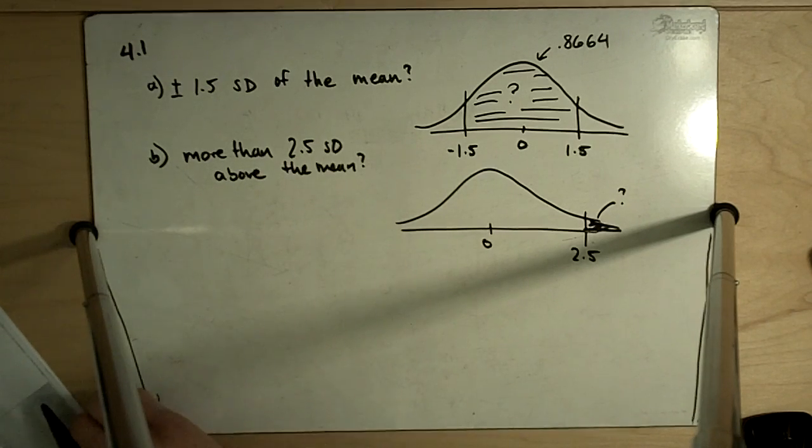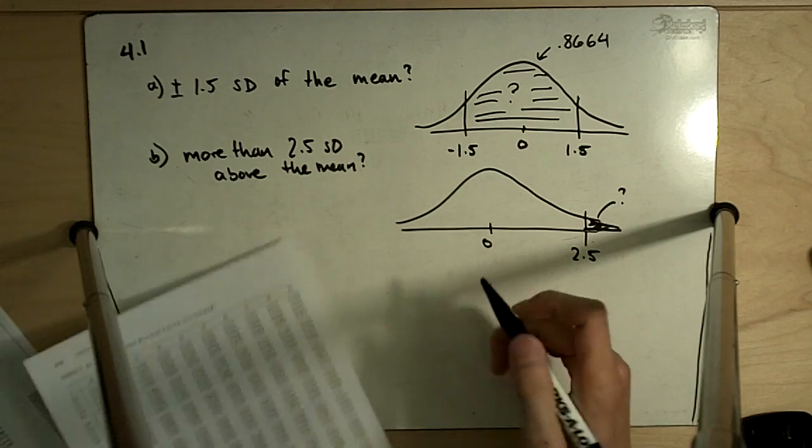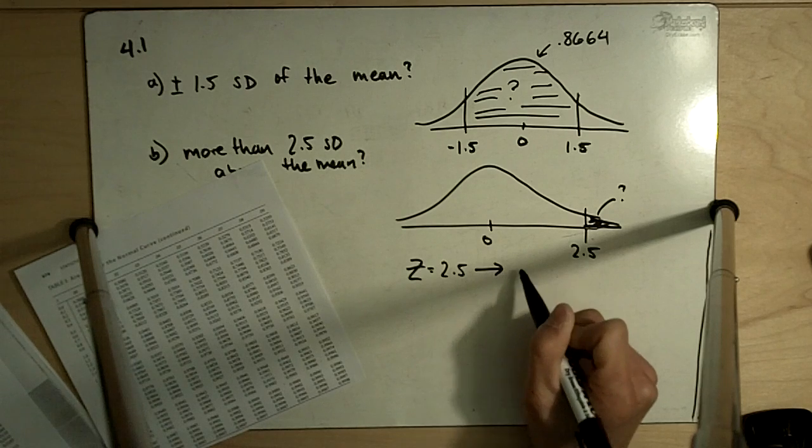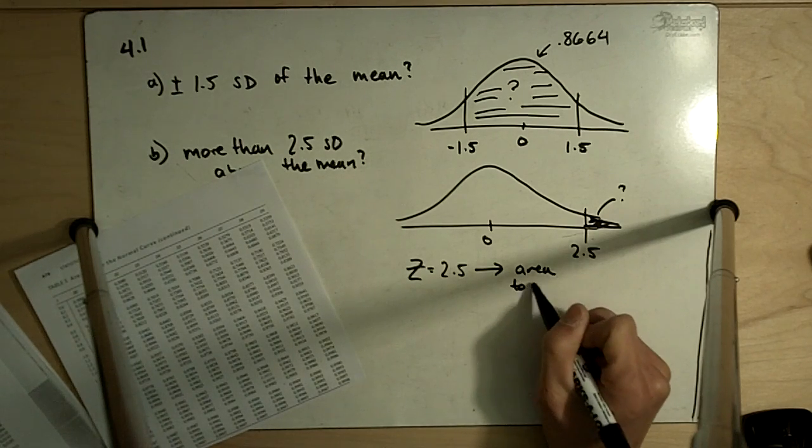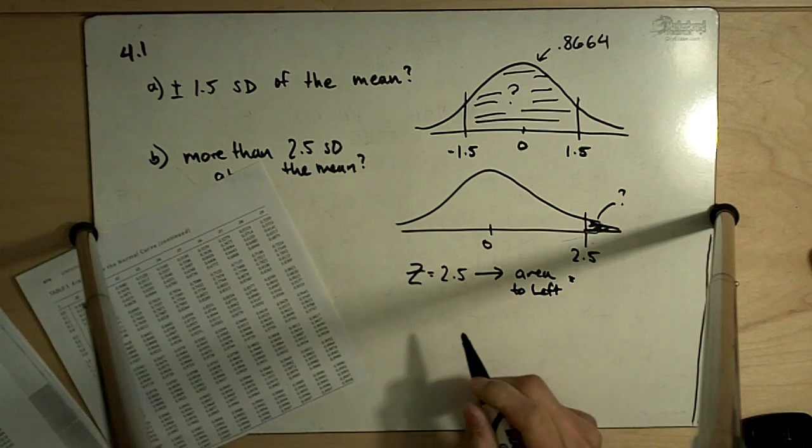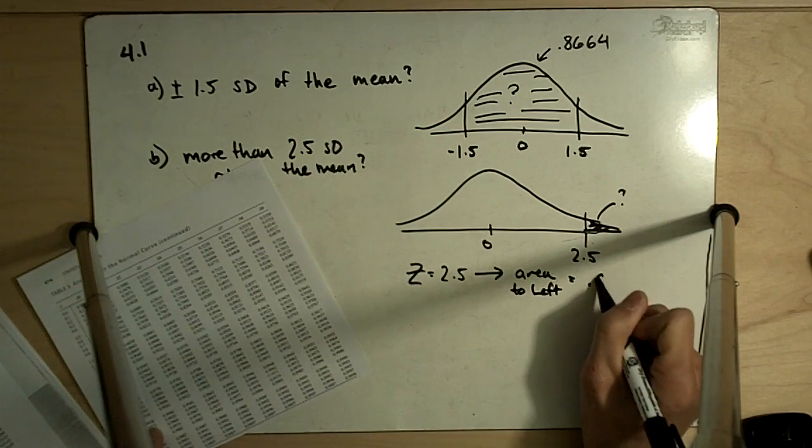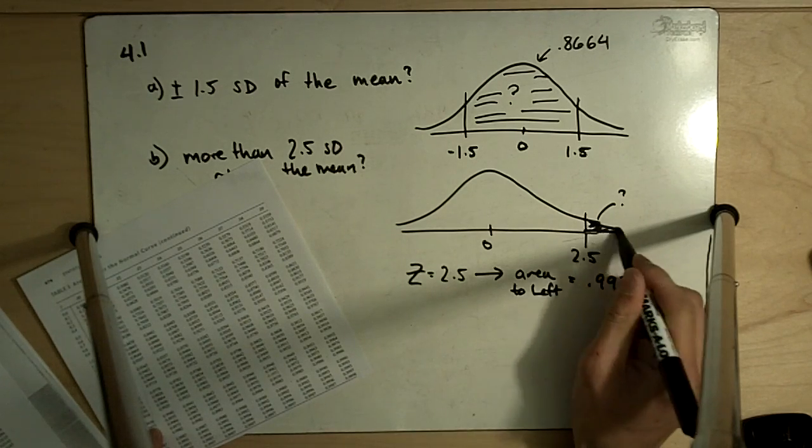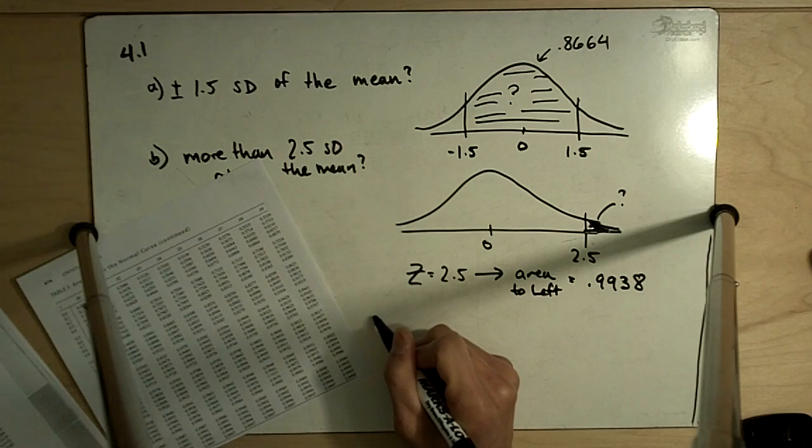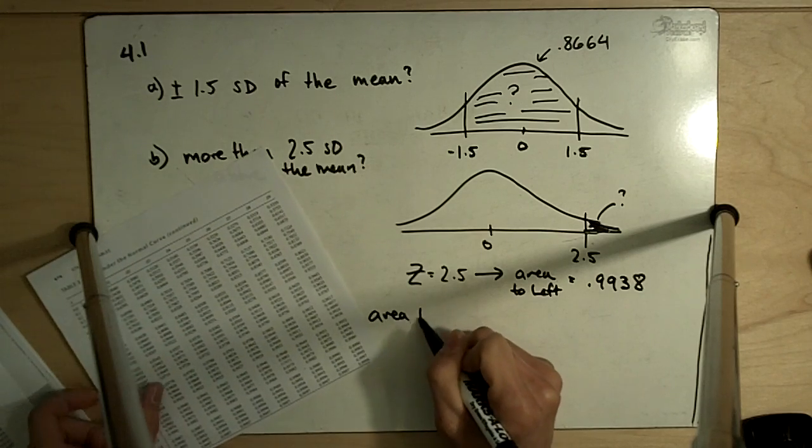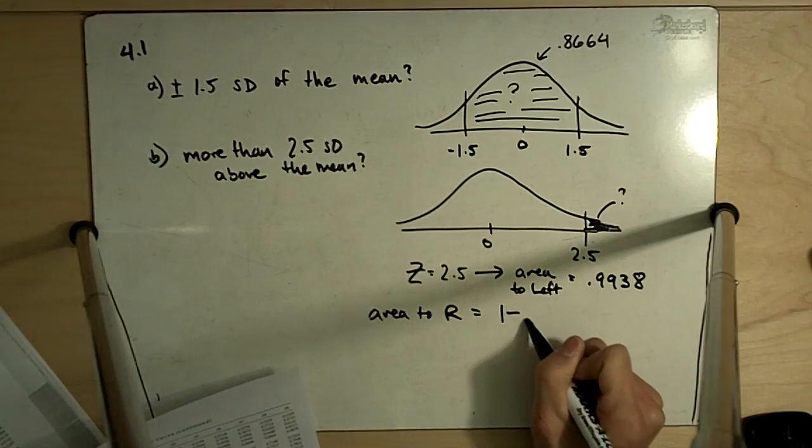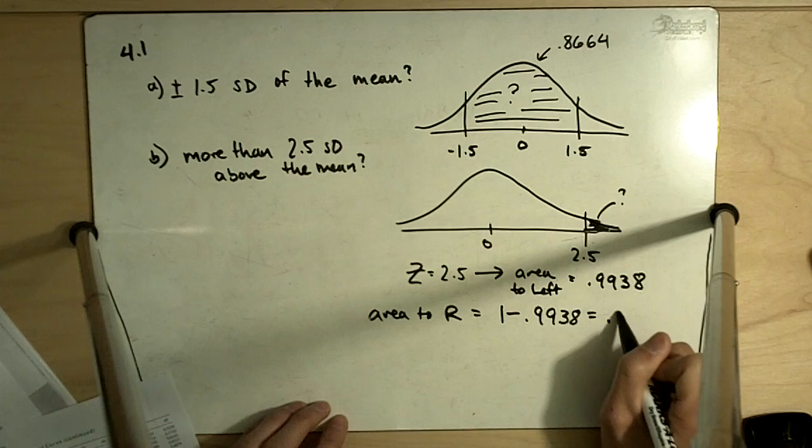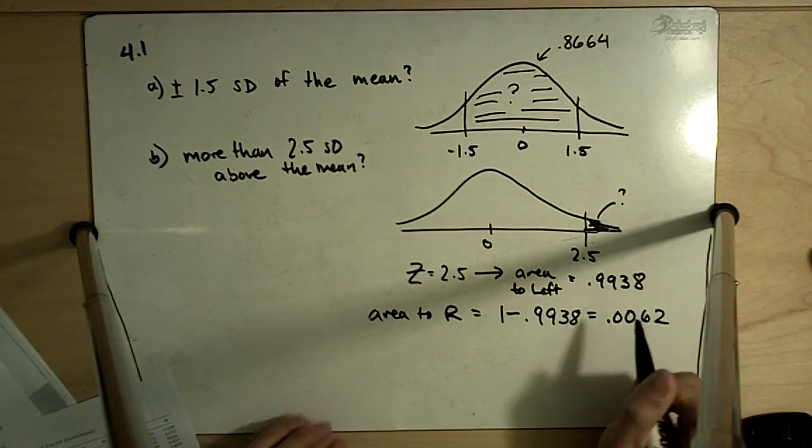If we look up 2.5 in our Z table, that corresponds to an area to the left equal to 0.9938, which means this part, the area to the right or above, is equal to 1 minus 0.9938, and in this case that's 0.0062.